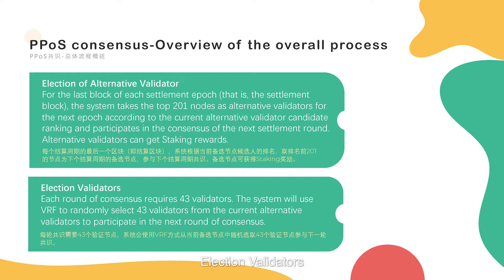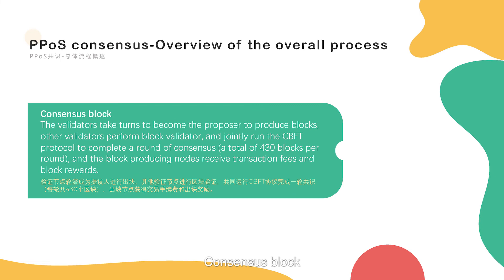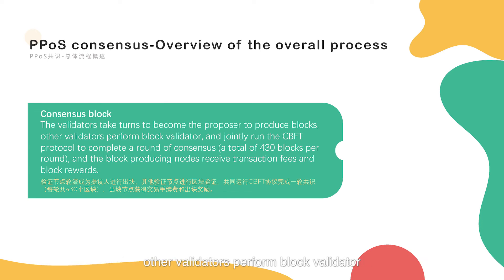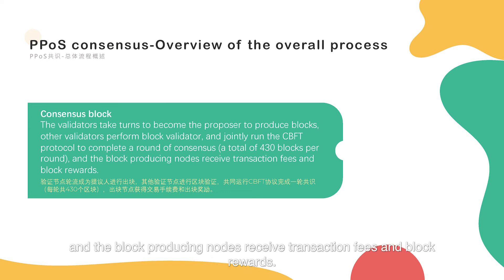Fourth, election of validators: each round of consensus requires 43 validators. The system will use VRF to randomly select 43 validators from the current alternative validators to participate in the next round of consensus. Fifth, consensus block: the validators take turns to become the proposer to produce blocks. Other validators perform block validation, and jointly run the CBFT protocol to complete a round of consensus — a total of 430 blocks per round. The block-producing nodes receive transaction fees and block rewards.